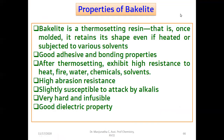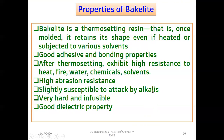The properties of Bakelite are: it is a thermosetting polymer — once it is molded by applying heat, it attains a permanent shape and cannot be changed back by any means. It has good adhesive and bonding properties. After thermosetting, it becomes a rigid hard mass. It exhibits high resistance to heat, fire, water, chemicals, and solvents, and it has high abrasion resistance. However, it is slightly susceptible to attack by alkalis, because it retains some acidic phenol groups that may react with basic chemicals such as alkalis.